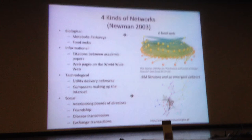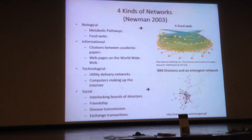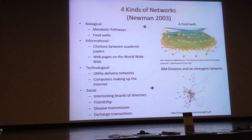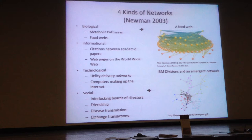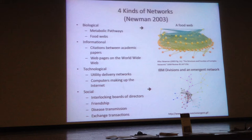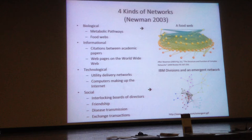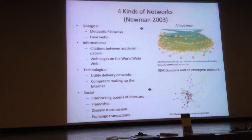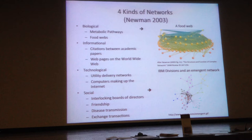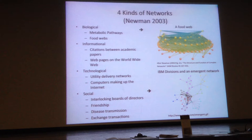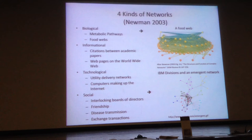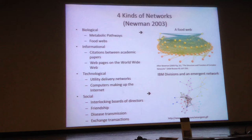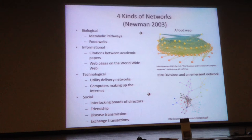Biological networks include things like metabolic pathways and food webs. Informational networks are citations between academic papers and linkages between websites on the World Wide Web. Technological networks include utility delivery networks and computers that make up the internet. Social networks include analyses such as interlocking boards of directors — you could form a network and see who is pivotal in being part of different boards. There are also friendship networks, disease transmission, and exchange transactions — all very good examples of different kinds of social networks.